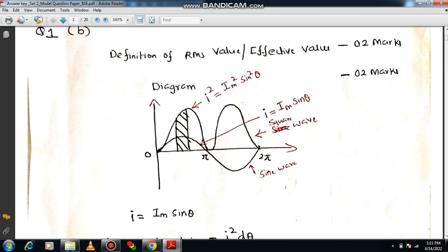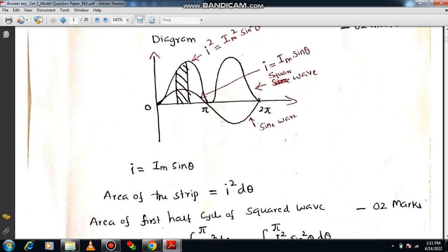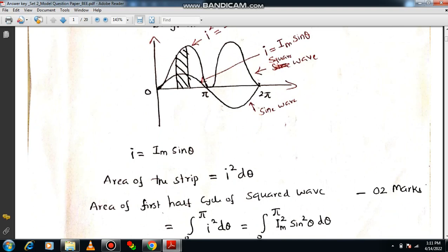In that small segment, you can mark I² = Im² sin²θ. And you can start doing the derivation for RMS value.